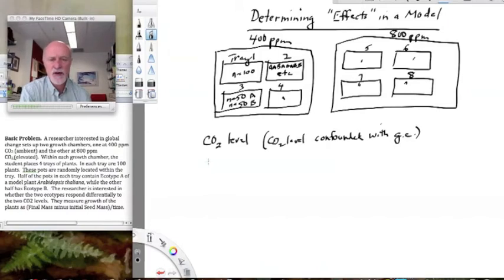Better experimental design would be to have multiple growth chambers at each CO2 level, but maybe we can't afford that. Maybe we only have two available to us. And so we have this confounding going on no matter what. So let's go ahead and assume we have to deal with that. And so what else do we have here? We have ecotype identity. And the levels of ecotype are A versus B. So we have ecotype, and every ecotype is found in every tray.